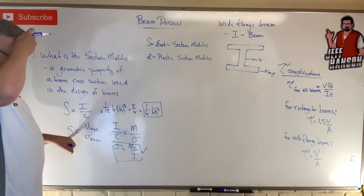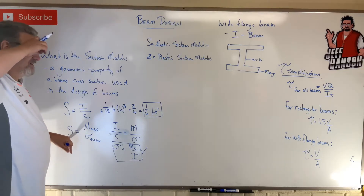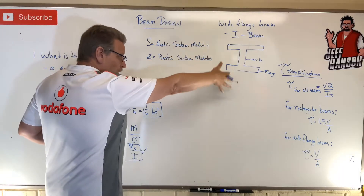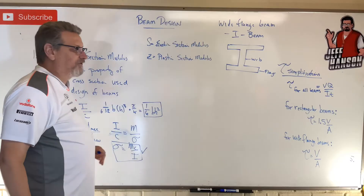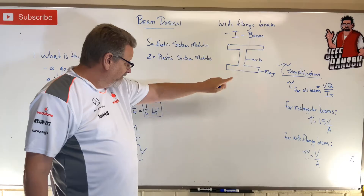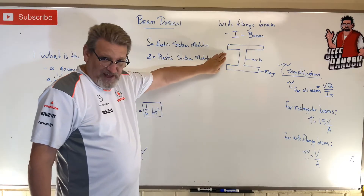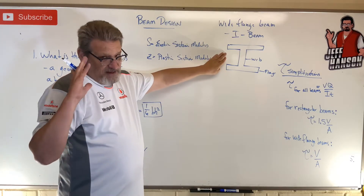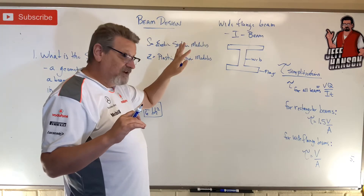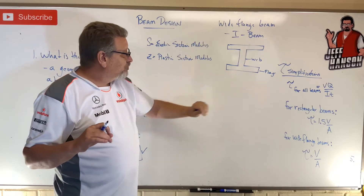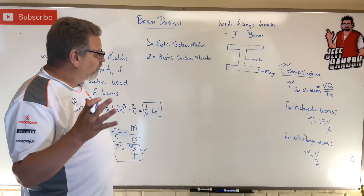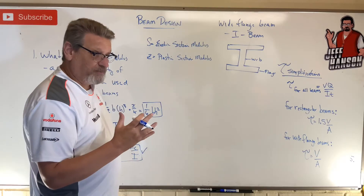Once we calculate the section modulus S, that allows us to go to the wide flange beam tables, look at all the different choices of I-beam, and say 'there's the one we need — that's the section modulus I need.' It allows us to select the right beam. Stay tuned for the next video where we'll do exactly that.